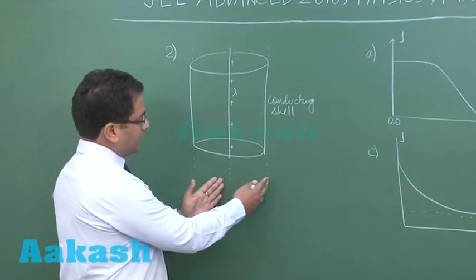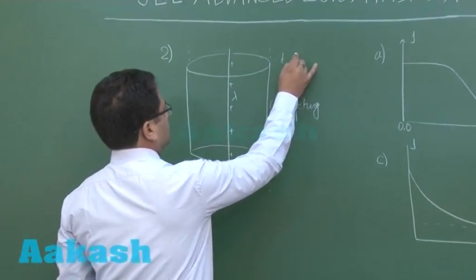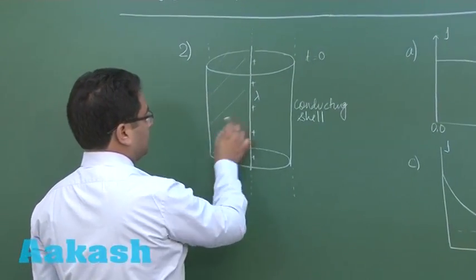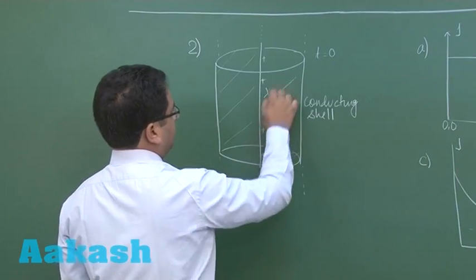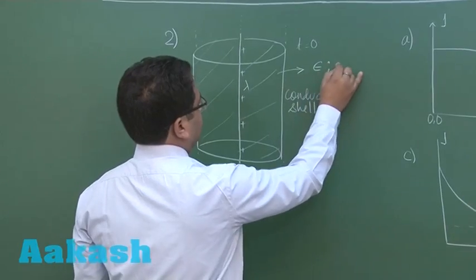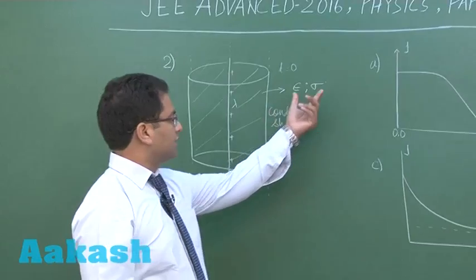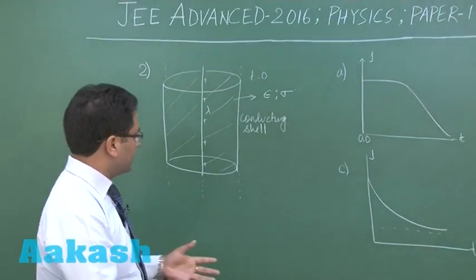But at t equals zero, the medium here is filled which has permittivity epsilon and conductivity sigma. Now, the moment you see that conductivity is there, quite obviously the charge would start flowing radially outward in a cylindrical fashion.